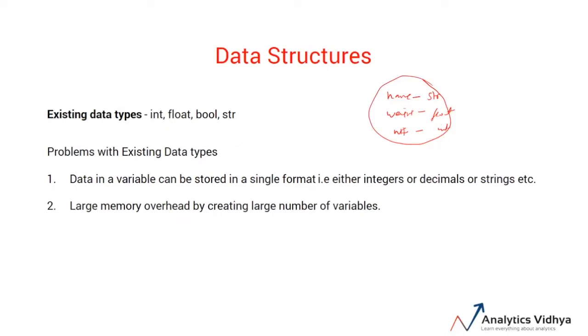Now, since a variable of this existing data type can only store a single value, there will be a large memory overhead if you wish to store copious amounts of data in variables. For example, if you want to store the information of a family in variables, then the number of variables might be small, say like five or six.